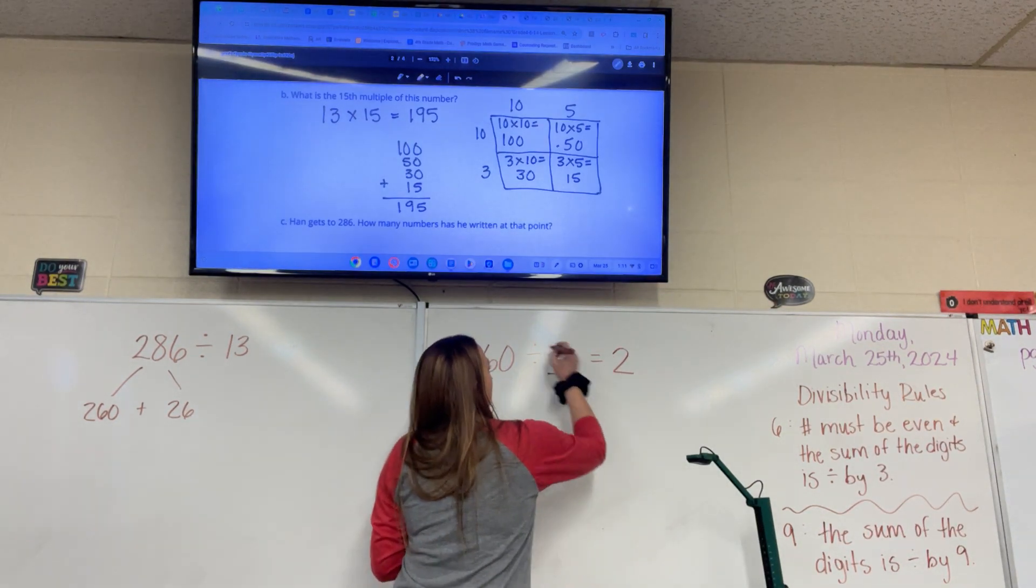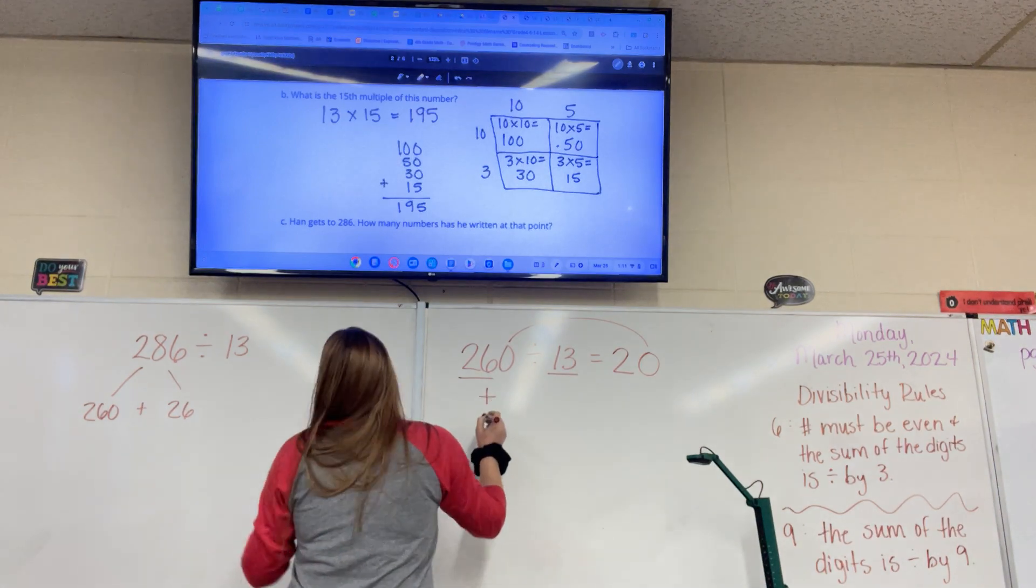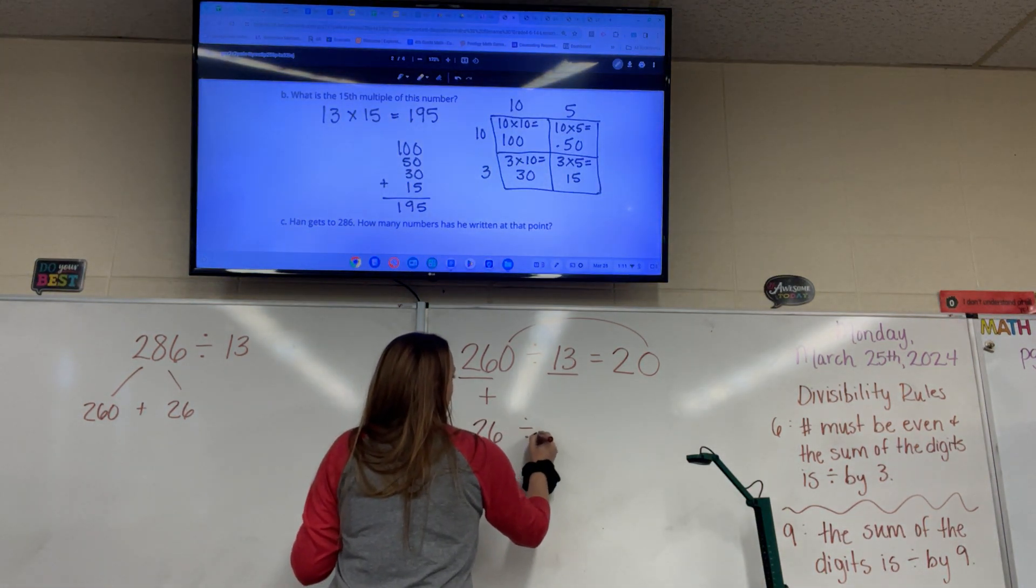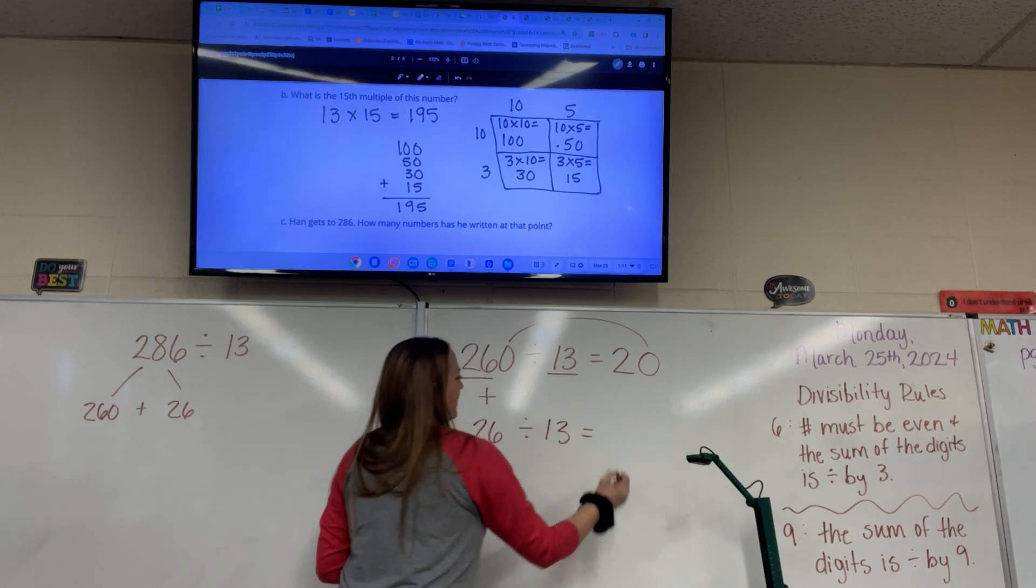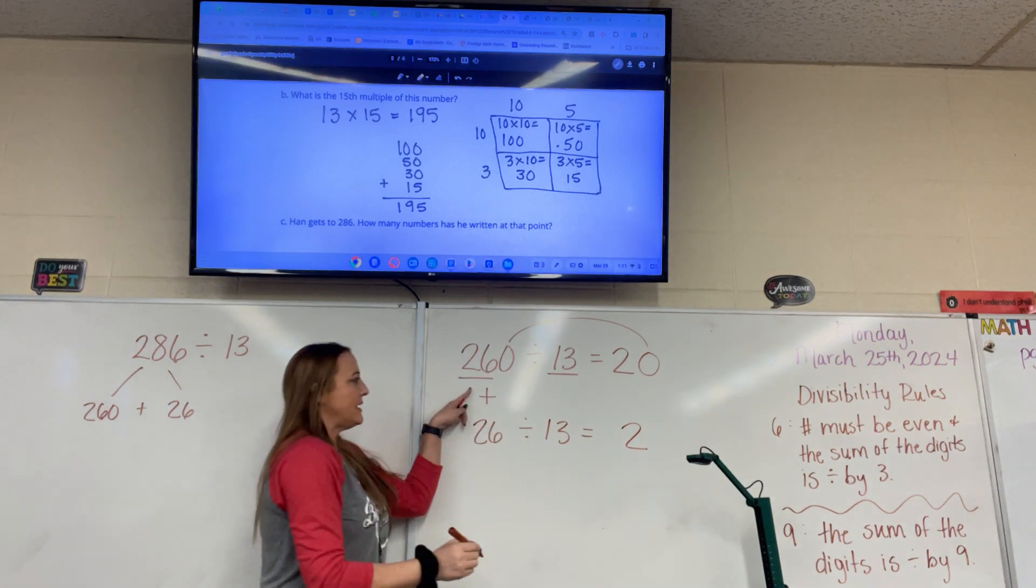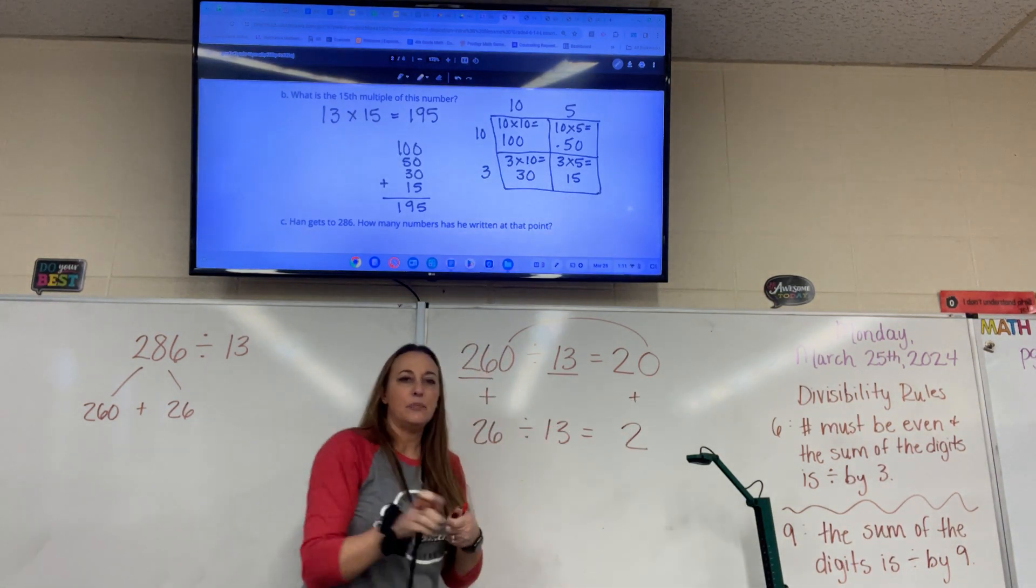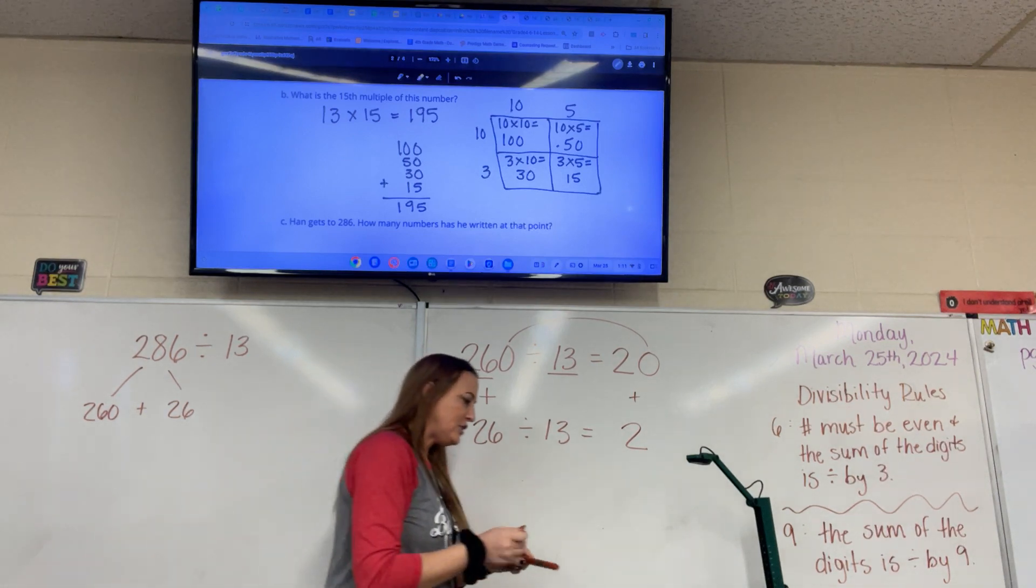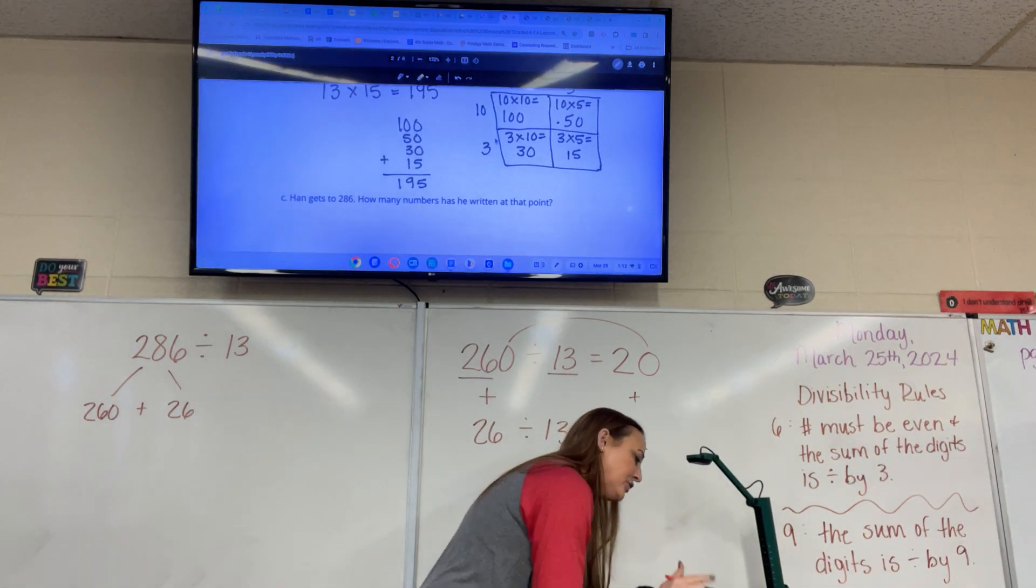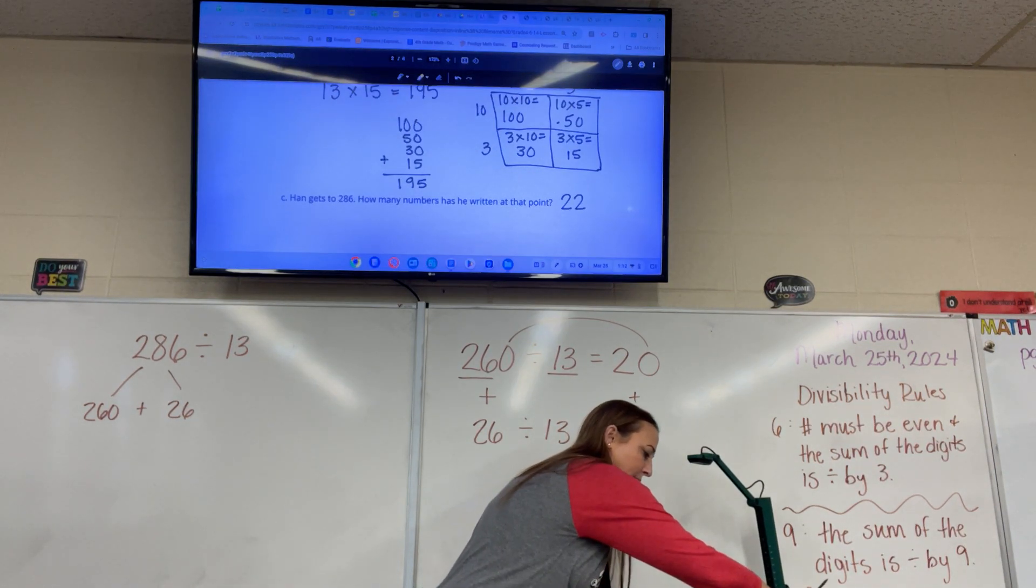Plus 26 divided by 13. What is 26 divided by 13? 2. 2. And since we added over here, we're going to add over here. What's 20 plus 2? 22. 22. So if Han gets up to 286, he will have written down 22 numbers at that point.